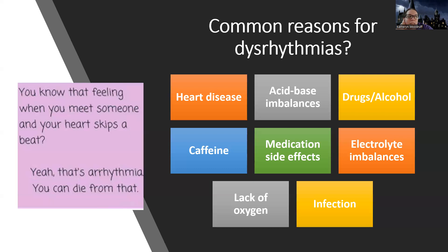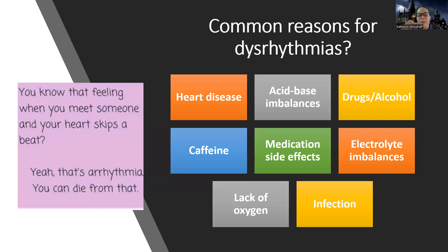Medication side effects can lead to dysrhythmias. Electrolyte imbalances — we usually talk about potassium and magnesium as the two most common electrolytes we check. Lack of oxygen is a big one. We talk later about patients on ventilators and suctioning them — if you suction a patient without hyper-oxygenating them, you'll actually see them start getting PVCs and other things. The heart is getting less oxygen, and anytime the heart is stressed out or asking where's my oxygen, it starts to have some irregularities. Infection and anything inflammatory can definitely lead to dysrhythmia issues. So in other words, everything can lead to dysrhythmias, but these are some of the big things.